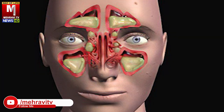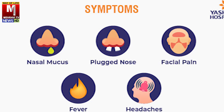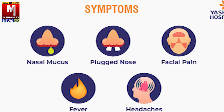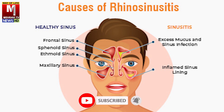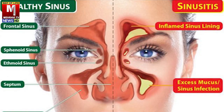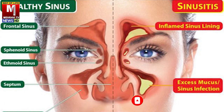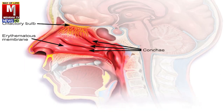سائنوسائٹس انسانوں میں پائی جانے والی سب سے عام بیماری تصور کی جاتی ہے۔ سائنوسائٹس کی علامات نزلہ، زکام، فلو کی علامات سے اتنی زیادہ مماثلت رکھتی ہیں کہ اسے اکثر فلو یا سردی ہی سمجھا جاتا ہے۔ سائنس دراصل ہوا سے بھرے چیمبرز ہوتے ہیں جو ناک کے گرد موجود ہوتے ہیں۔ کھوپڑی اور چہرے کی ہڈیوں کی بناوٹ اس طرح ہوتی ہے کہ ان کے درمیان یہ سائنس بن جاتے ہیں۔